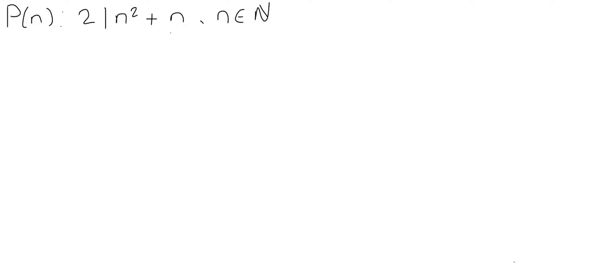We're looking to prove that for all natural numbers n, 2 divides n squared plus n, so that is that n squared plus n is even. The notation I've introduced here is that P(n) means that this statement, that 2 divides n squared plus n, is true. So that's what we're trying to prove, and this notation helps with the logic of the proof later on.